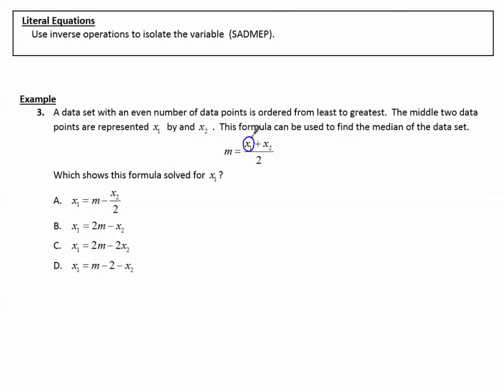Which shows this formula solved for x sub 1? That means we need to get the x sub 1 by itself. So we have to undo what's over here near the x sub 1. We will use inverse operations. X sub 1 has divided by 2. What's the opposite of divided by 2? Multiply by 2. So multiplying by 2 to both sides of the equation, 2 times m. So we're looking for anything that has 2 multiplied to m. So I know now from process of elimination, it's either b or c.